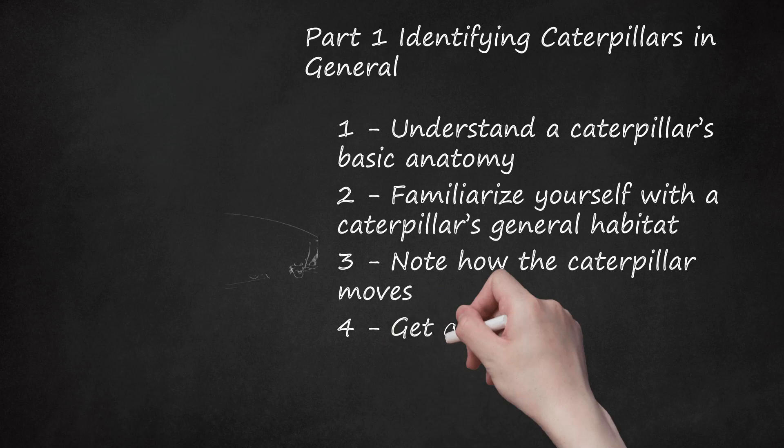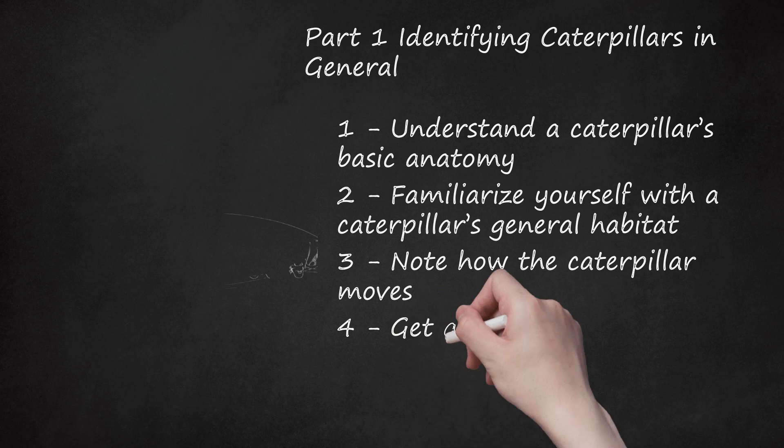Get a whiff of it. Some caterpillars, such as the zebra swallowtail, have a Y-shaped gland called the osmeterium on their neck that gives off a pungent odor to ward off predators.